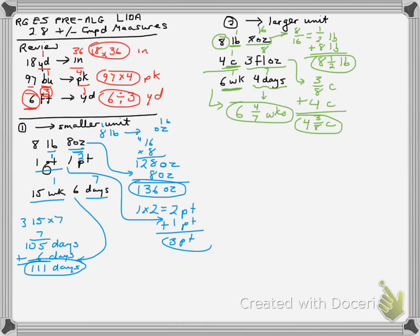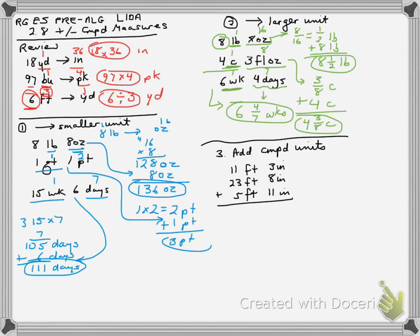The third skill is how to add compound units. The first thing we do is align our units. If we have 11 feet 3 inches, 23 feet 8 inches, and 5 feet 11 inches, we align up the feet and align up the inches. We add all the inches together: 11 plus 8 is 19, plus 3 more is 22 inches. We add the feet: 5, 8, 9, 2, and 1 more gives 39 feet. But we can't stop there — we need to take the smaller unit and convert to the larger unit if applicable.